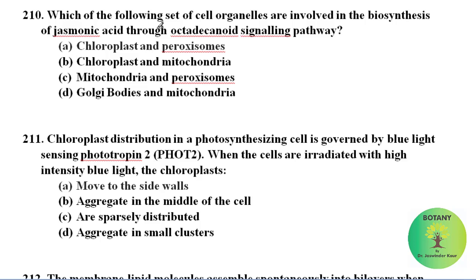Which of the following set of cell organelles are involved in the biosynthesis of jasmonic acid through the octadecanoid signaling pathway? They are the chloroplast and peroxisomes. These two are involved in jasmonic acid biosynthesis.